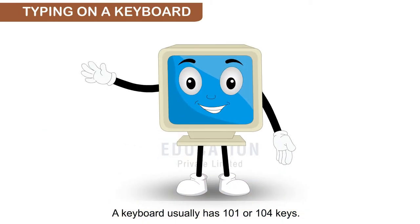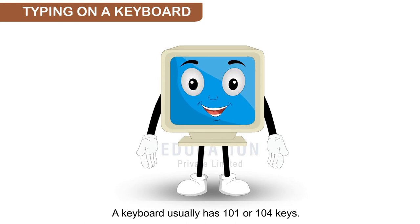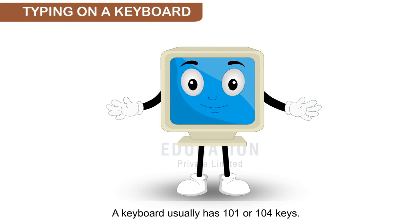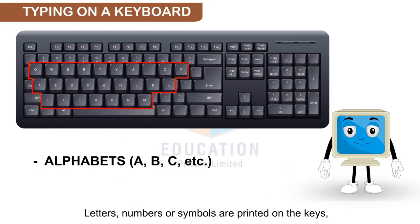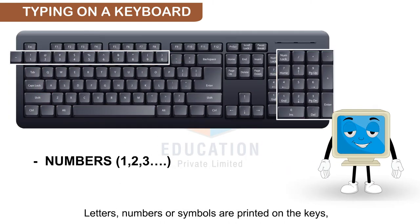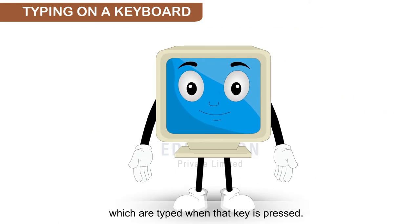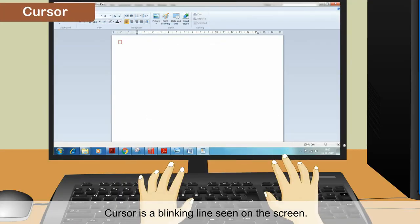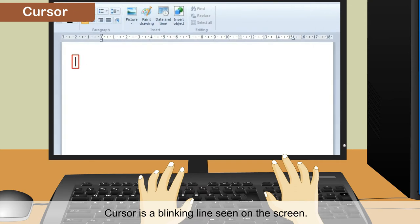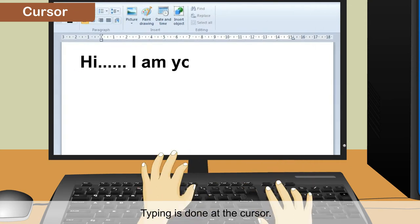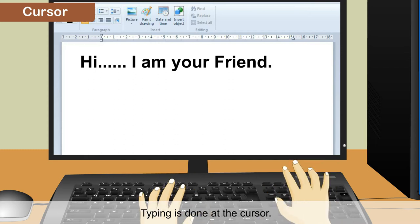A keyboard usually has 101 or 104 keys. Letters, numbers, or symbols are printed on the keys, which are typed when that key is pressed. The cursor is a blinking line seen on the screen, and typing is done at the cursor.